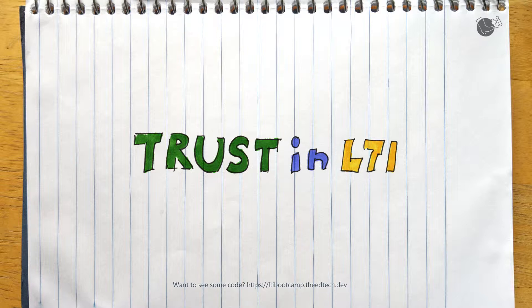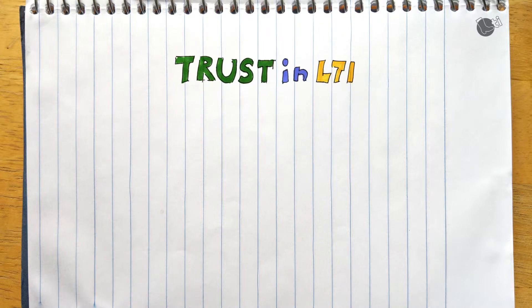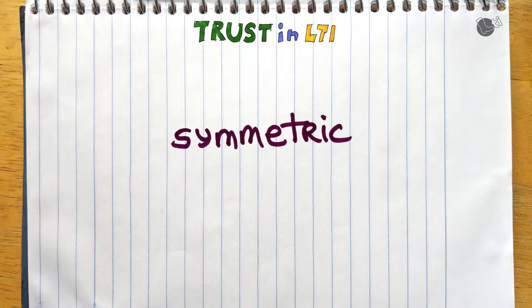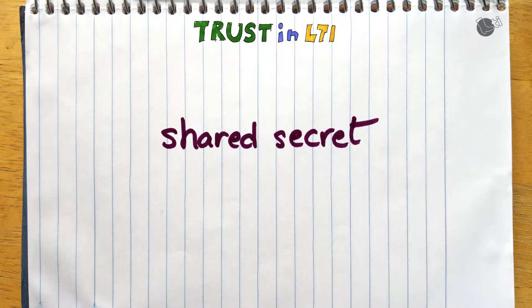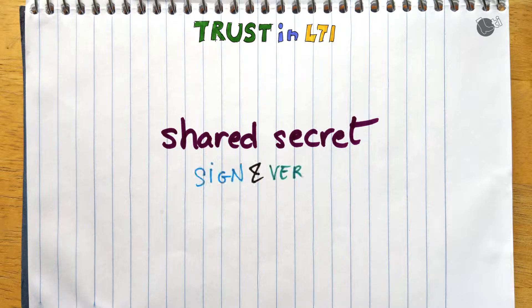First, a quick recap about where we were before LTI 1.3. In the prior version of LTI, trust was established using a symmetric key — or in simpler terms, a shared secret. What it means by being symmetric is that it's the same key used to sign outgoing requests and to verify the signature.